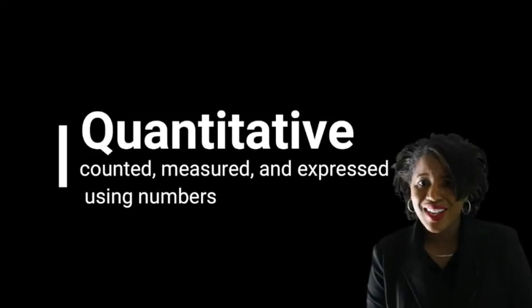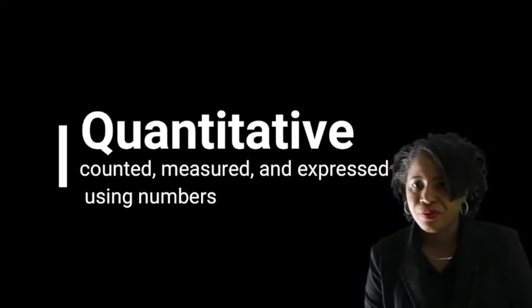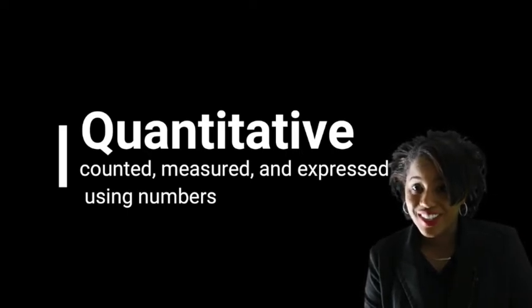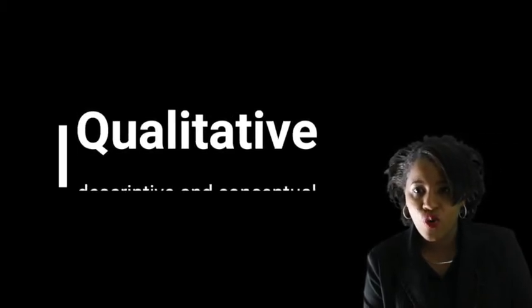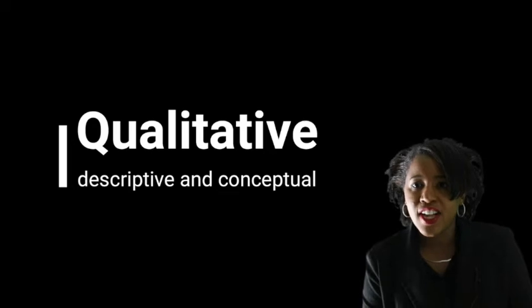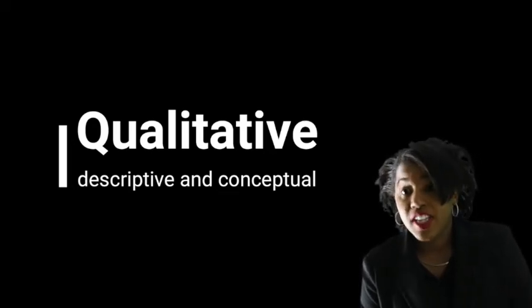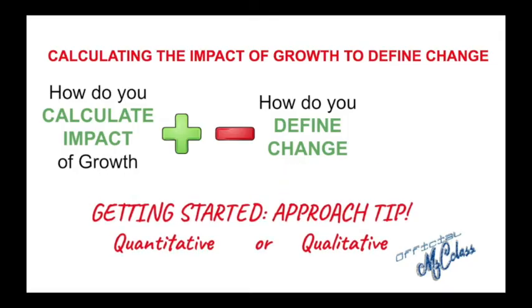So let's build our vocabulary wall. We need to understand exactly what I am talking about. Quantitative data: it can be counted, measured, and expressed using numbers. Take a moment to write this down. Next, qualitative: descriptive and conceptual — it's a cute jingle, you'll remember it. Descriptive and conceptual — qualitative. Using quantitative or qualitative data may help you satisfy the solution to this problem.